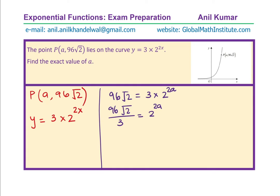Dividing 96 by 3, we get 32 square root 2 equals 2 to the power of 2A. Since the base is 2, we can also write the left-hand side to base 2. Now, 32 is 2 to the power of 5 and we have 2 to the power of one half, which is square root 2. That should be equal to 2 to the power of 2A.